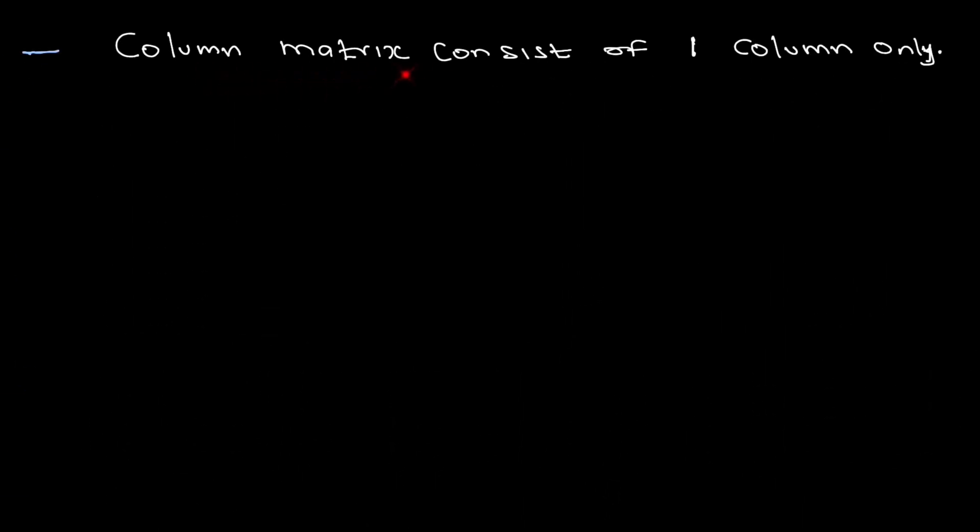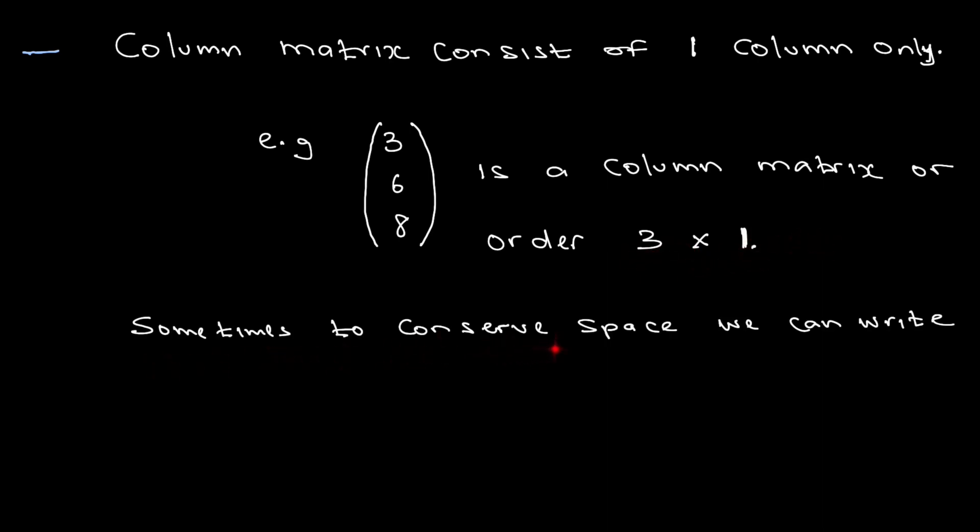Column matrix consists of one column only. Example: this is a column matrix of the order three rows by one - three by one matrix. Sometimes, to conserve space, we can write a column matrix with a curly bracket. And here is a curly bracket: three, six, eight in a curly bracket. That's the order of three rows, one column - three by one, same matrix, column matrix using brackets or curly brackets.